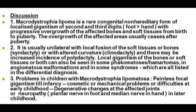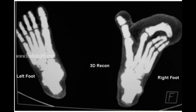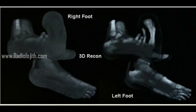Macrodystrophia lipomatosa is a rare congenital, non-hereditary form of localized gigantism of the second and third digits. Usually the foot is more commonly affected than the hands. There is progressive overgrowth of the affected bones and soft tissues from birth to puberty, after which the overgrowth usually ceases. It is usually unilateral with local fusion of the soft tissues or bones, called syndactyly, or altered curvature called clinodactyly, and there may be an increased incidence of polydactyly.